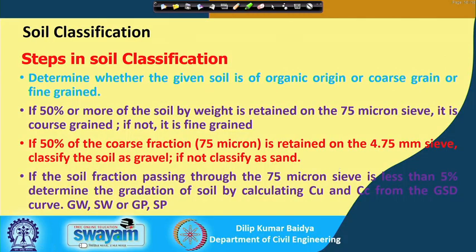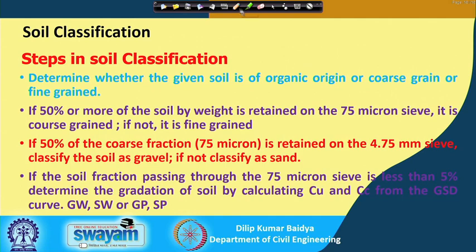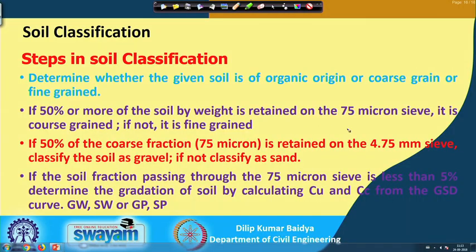The steps in soil classification: first, determine whether the given soil is of organic origin, coarse-grained, or fine-grained by opening the bag and observing. If 50 percent or more by weight is retained on the 75 micron sieve, it is coarse-grained; otherwise fine-grained. If 50 percent of the coarse grain fraction is retained on the 4.75 mm sieve, the soil is gravel; otherwise it is sand. If less than 5 percent passes through 75 microns, determine gradation by calculating Cu and Cc.